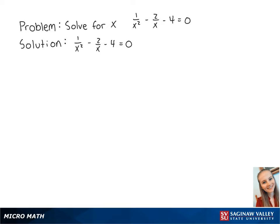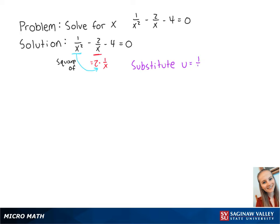For this problem, we want to solve for x in the equation 1 over x squared minus 2 over x minus 4 equals 0. We can see that 2 over x is equal to 2 times 1 over x, and 1 over x squared is the square of 1 over x. So we can use a substitution of u equals 1 over x to make this into a quadratic equation. Now we have u squared minus 2u minus 4 equals 0.